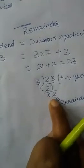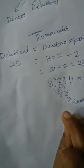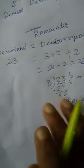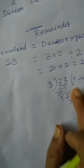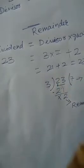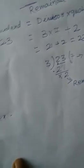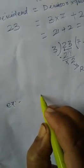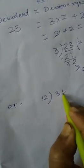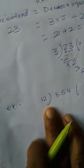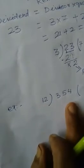Some divisions are in decimal form also, but in the early stage — because you are in fourth standard — no division containing a decimal answer is there. Only in the case of a remainder, if it is there, we have to carry it. Suppose one more example: we have to divide 354 by 12. I will teach you the process of how we perform that division.